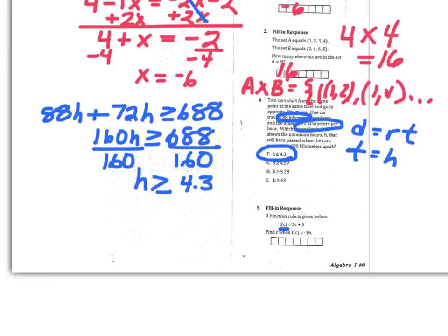So instead of T of C, I'm going to plug in 16 or negative 16. So negative 16 is my T of C is equal to 3C plus 5. You can solve this two-step equation. The biggest part about this problem is going and making sure that you are plugging in for the appropriate thing.